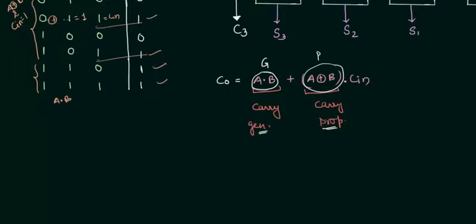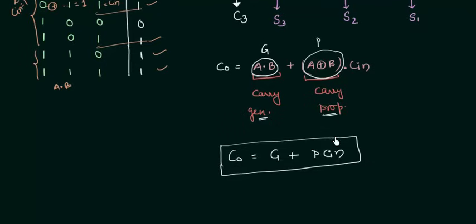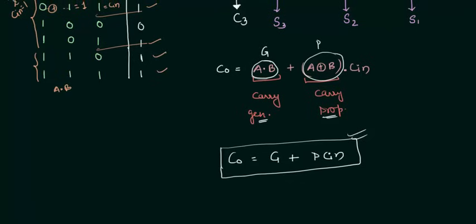So how I can write this thing? C_o is equal to G OR P·C_in. So we have stepped into the process of predicting our carry output once we are having this equation. So let's generalize it, and generalization will be done by using this full adder configuration. If C_{-1} is your carry input, C_0 is